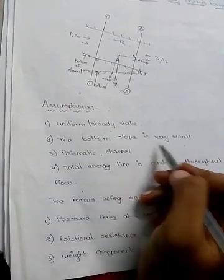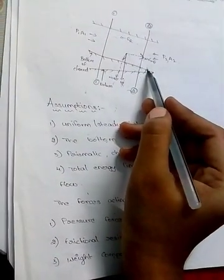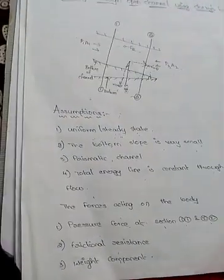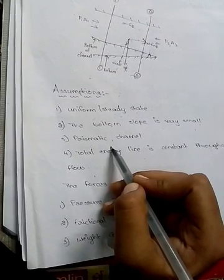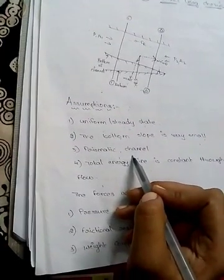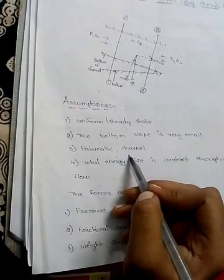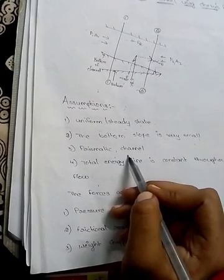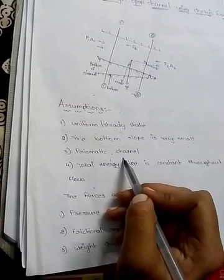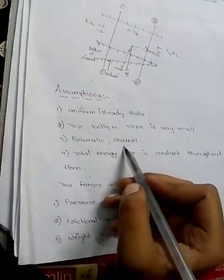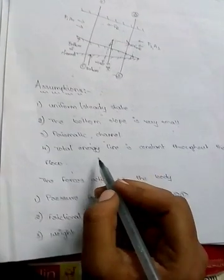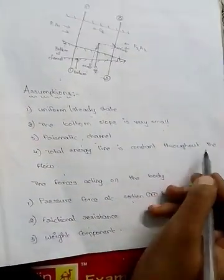Second, the bottom slope is very small. Third, it should be a prismatic channel — the prismatic channel does not change its dimensions. Also, the total energy line is constant throughout the flow.